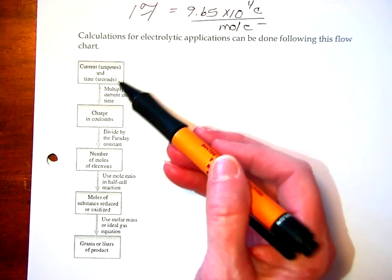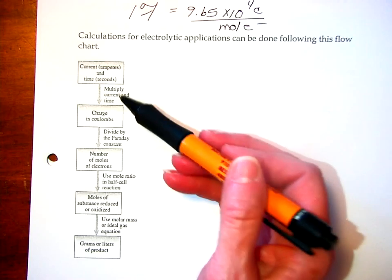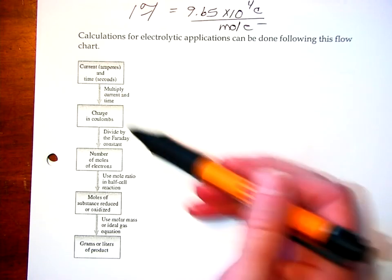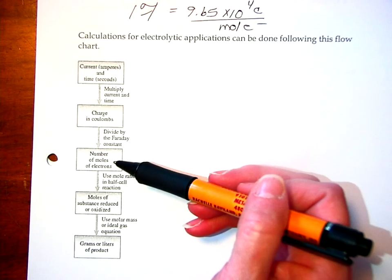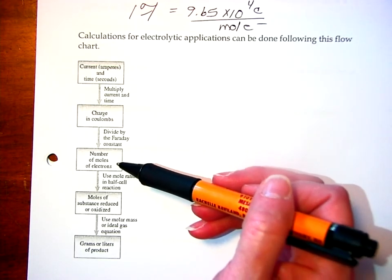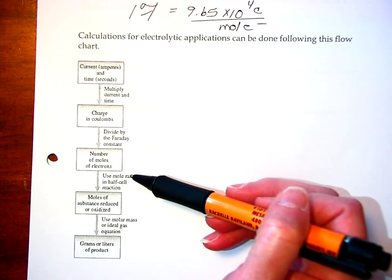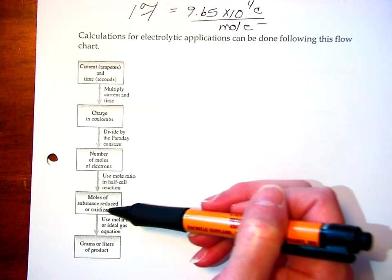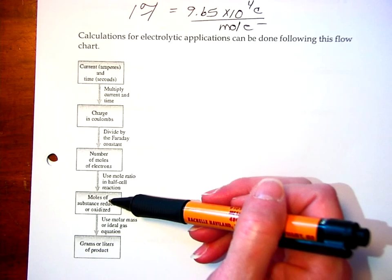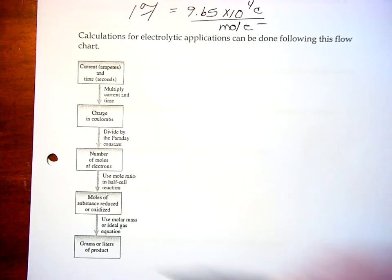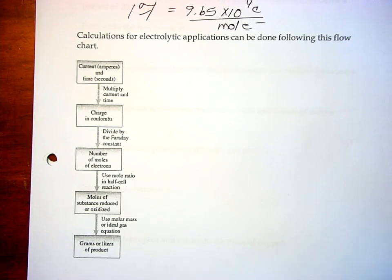If you know the current and the time, you can multiply them to get the charge in coulombs. If we know the coulombs, we can use the Faraday constant to get the number of moles of electrons. And, if we know the chemistry and the mole ratio in the cell reaction, we can get the moles of material reduced or oxidized. And then, using the molar mass, we can change that to get the mass of the product. Or, if we're looking at a gas, we can get the liters of that product.